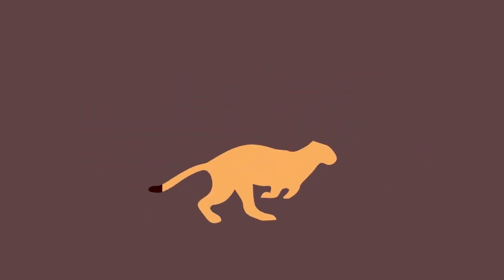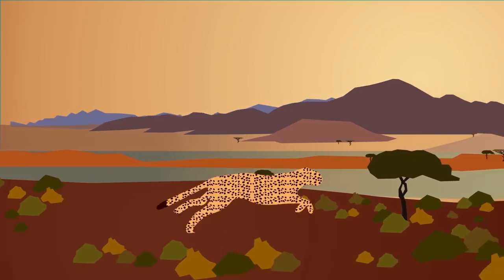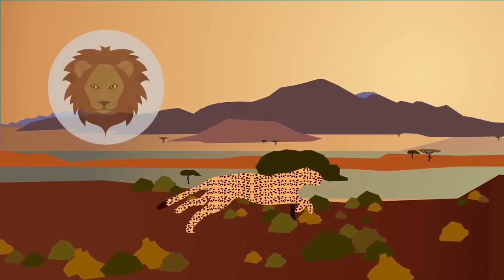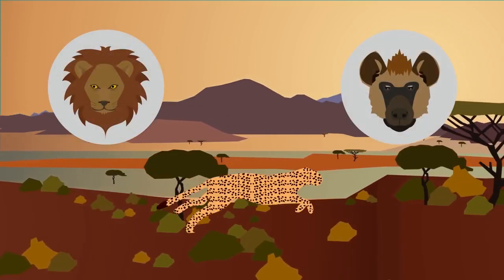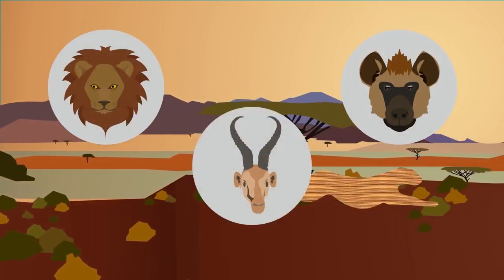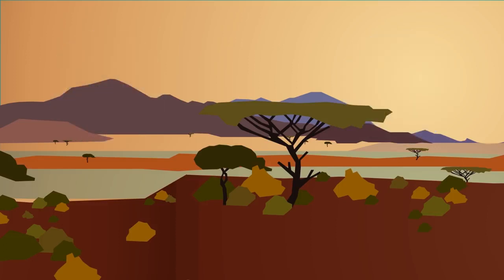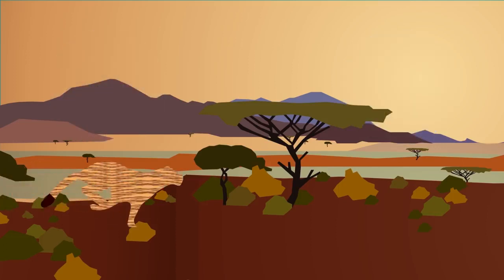One of the cheetah's natural habitats are the savannahs of Africa, where you can find lions and hyenas who both compete with cheetahs for prey, and sometimes even try to kill them for food. Cheetahs need to be able to outstrip their prey and their predators — and to do so, they run very fast.